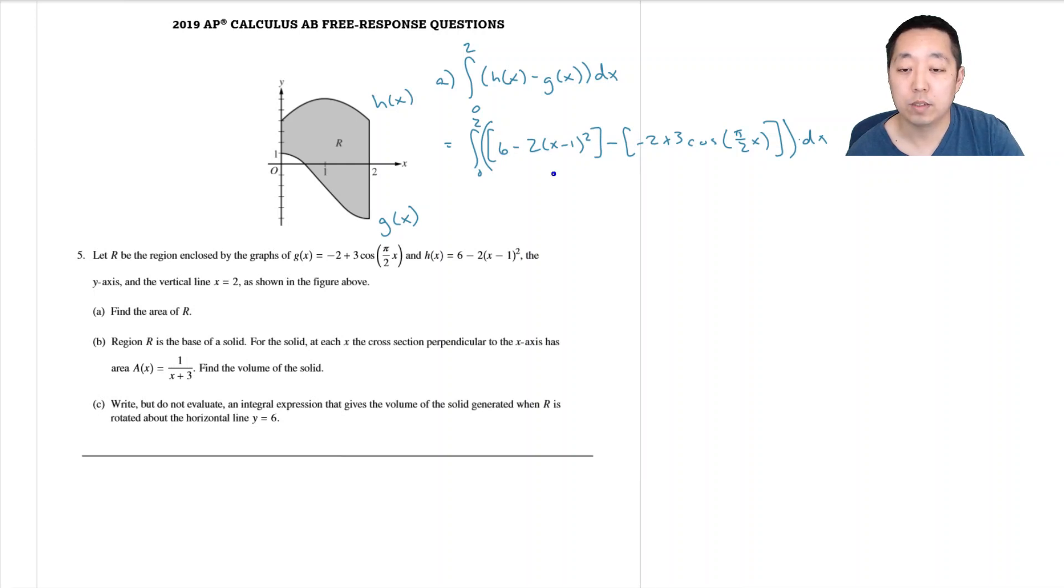Six minus negative 2 is going to be six plus two is going to be eight minus two X minus one squared minus three cosine pi over 2x. So this is what I'm integrating.